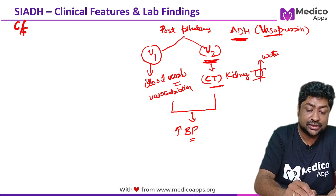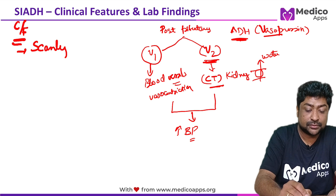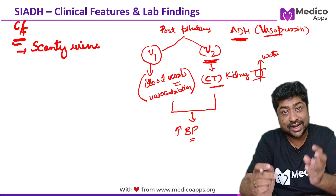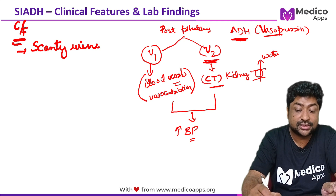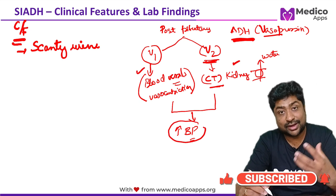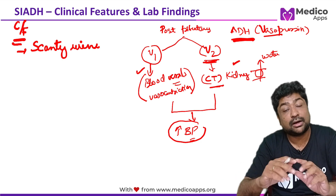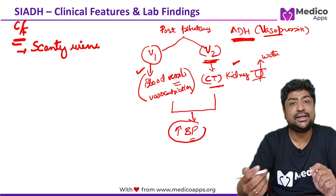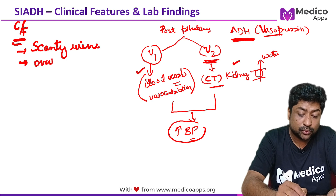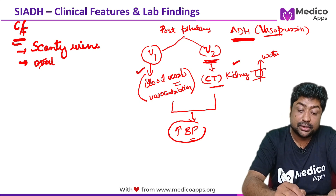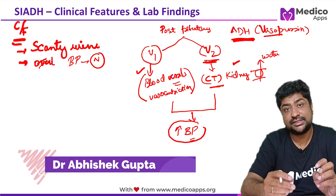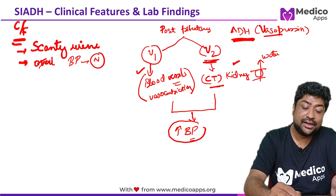One clinical feature you will see in this patient is scanty urine. Now, regarding the effect on blood vessels causing vasoconstriction and increased BP — remember, all other parameters are normal here, only vasopressin is increased. So whatever increase in BP is caused by volume overload or vasoconstriction is counteracted by other compensatory mechanisms. BP is primarily under the influence of aldosterone, so even though there is water retention in the body, the BP in these cases will be normal. The patient will present with primary disease symptoms, scanty urine, and normal BP.